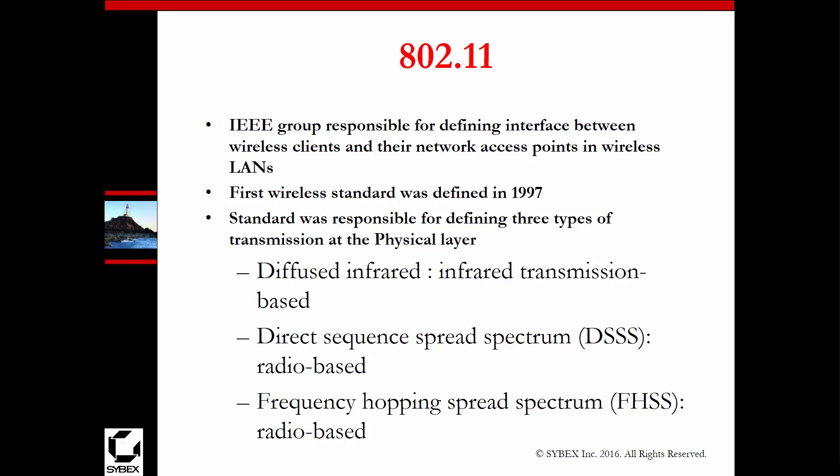Wi-Fi has different variations: 802.11a, b, g, n, ac, and ad, among others. But it's basically what allows us to connect wirelessly for communication.